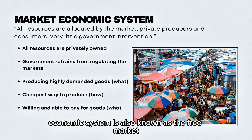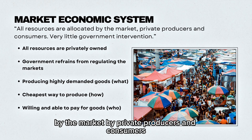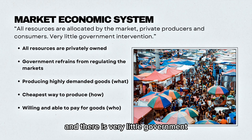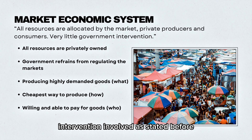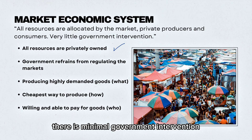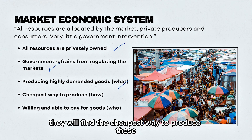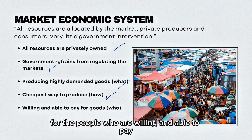The market economic system is also known as the free market. This is when all resources are allocated by the market by private producers and consumers and there is very little government intervention involved. All resources are privately owned, there is minimal government intervention, and firms will produce the highly demanded goods, finding the cheapest way to produce these for the people who are willing and able to pay.